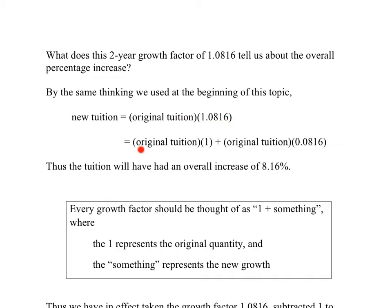That is to say, original tuition, one copy of original tuition, plus 0.0816 copies of the original tuition. So the tuition will have had an overall increase of 8.16%. What did I just do? I took the decimal form of 0.0816 and I converted it to the percent form. We do our computations in decimal form, but we are often asked at the end to express answers in percent form.